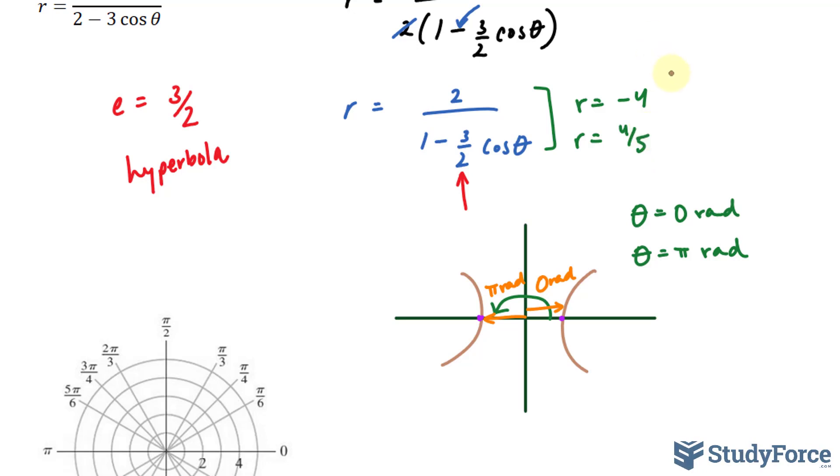So you have two points, one point that is at negative four and zero radians, and another point that is at four over five and pi. Let's go ahead and plot those points.